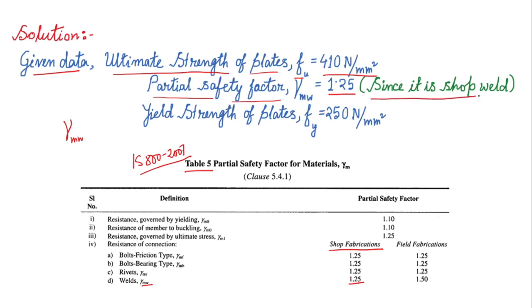Next, yield strength of plates Fy. As the grade of the plate is Fe 410, its corresponding yield strength is 250 newton per mm square.